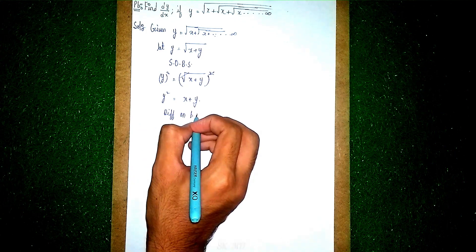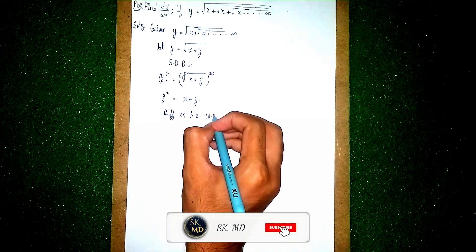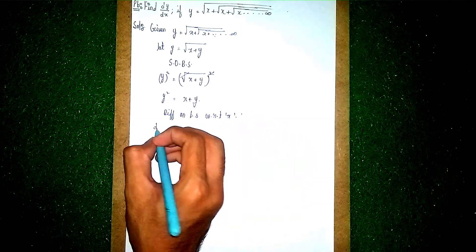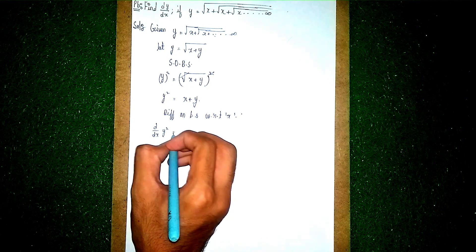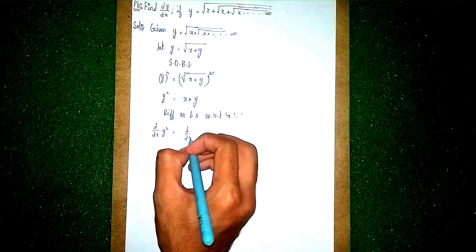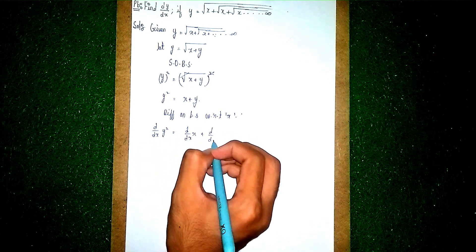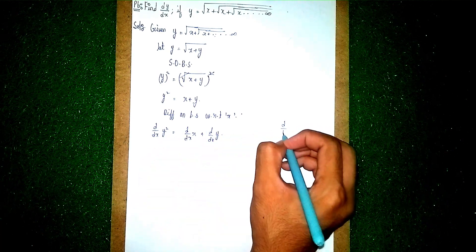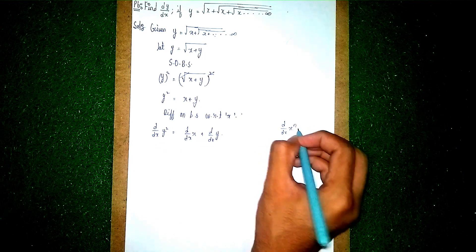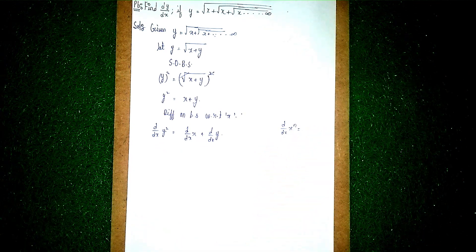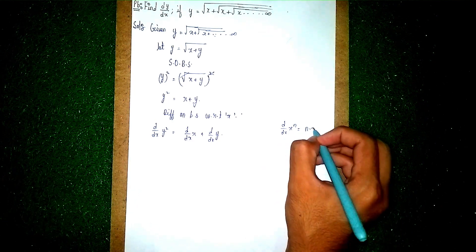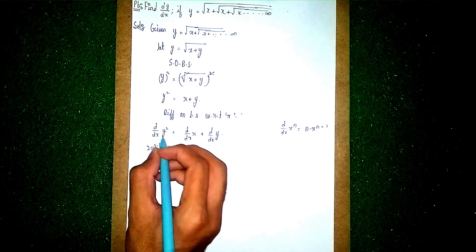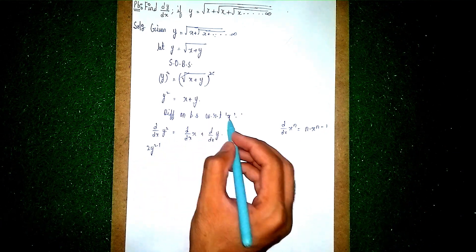Now differentiate on both sides with respect to x. So we get d/dx of y squared is equal to d/dx of x plus d/dx of y. The left side is in the form of d/dx of x to the power n, which gives n times x to the power n minus 1. So it becomes 2y to the power 2 minus 1.